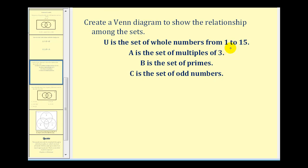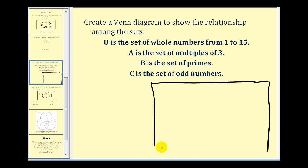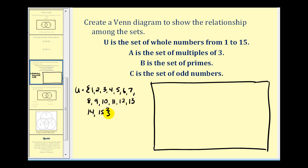The universal set is going to be contained within a rectangle. Let's go ahead and sketch that. It will be helpful to list all the elements of the universal set. The elements from the universal set that belong to set A are the multiples of three: three, six, nine, twelve, and fifteen.